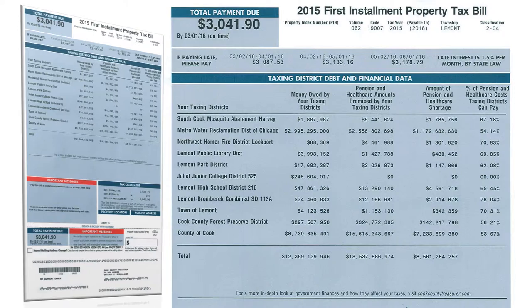On your first installment property tax bill, you will see information from the primary taxing districts that receive part of your payment. Read this information so you can see where your tax dollars are going.